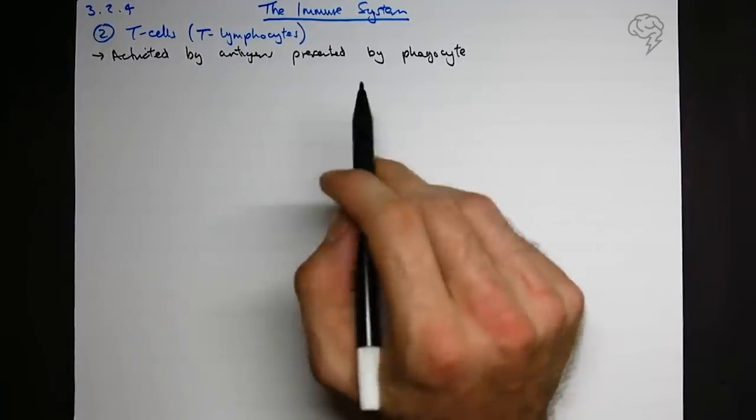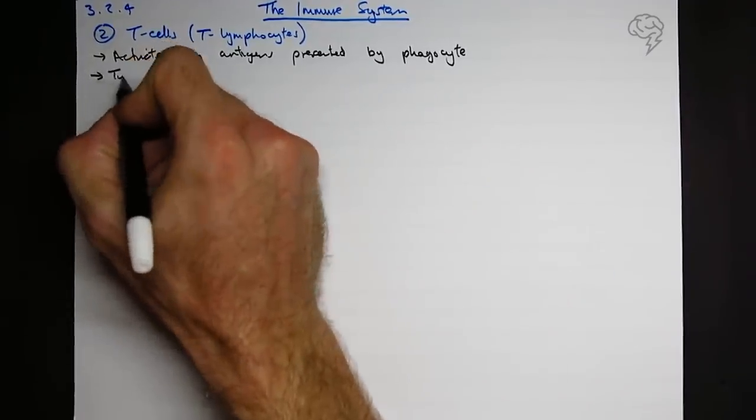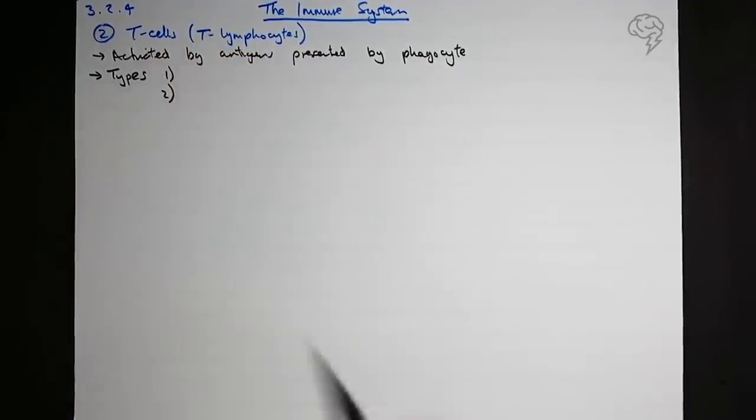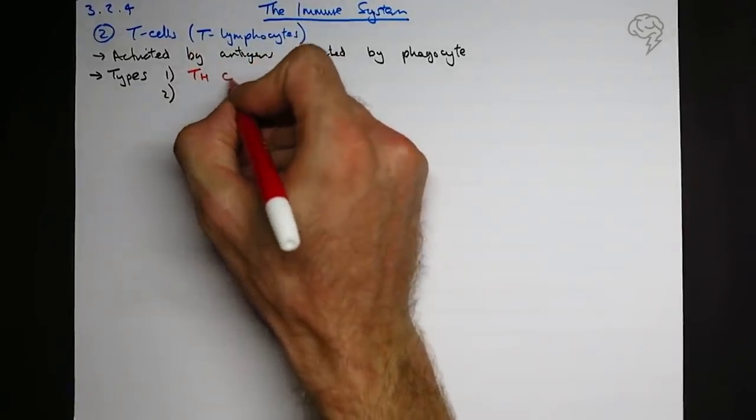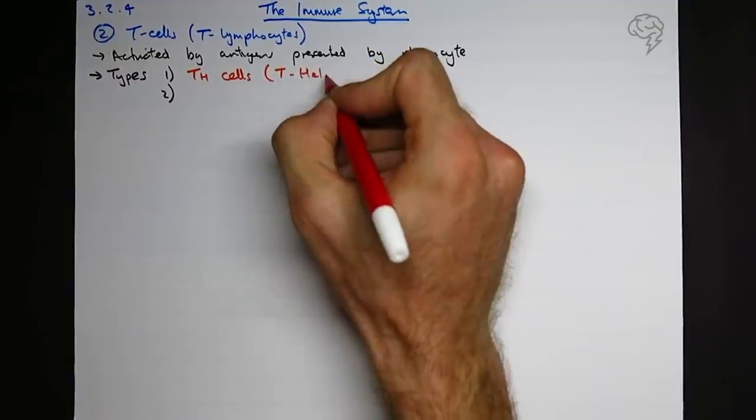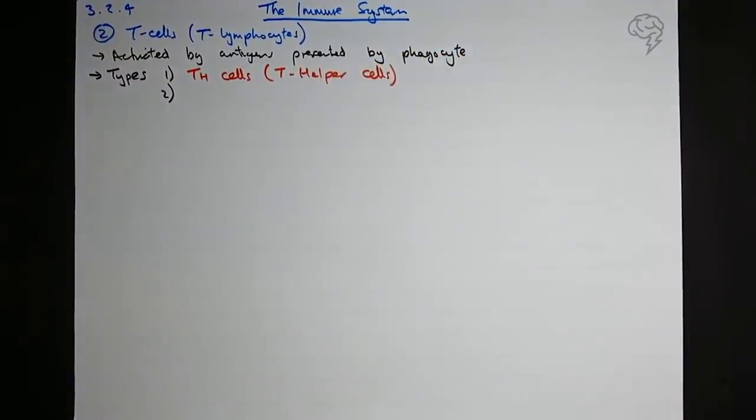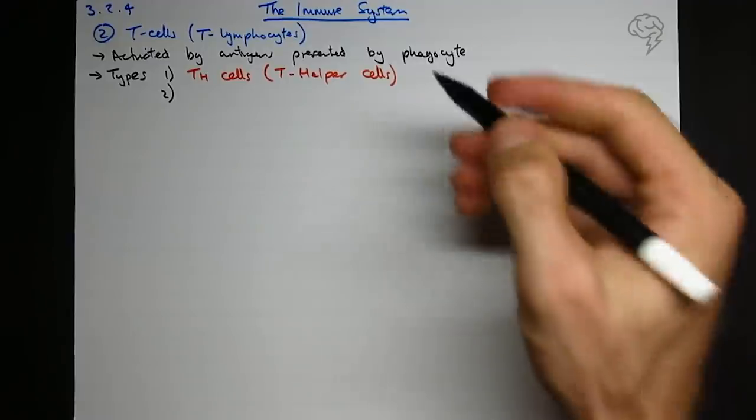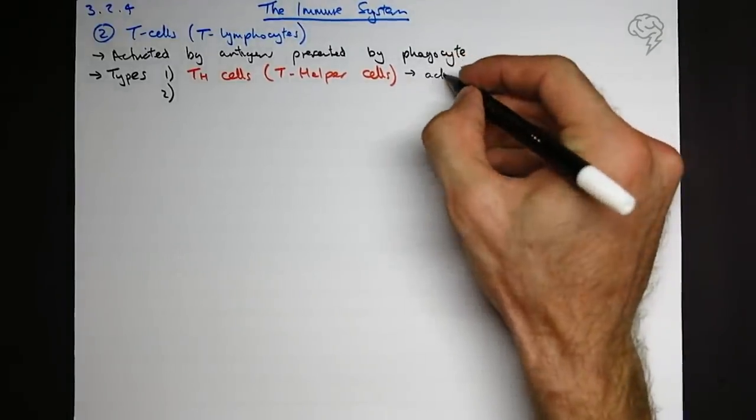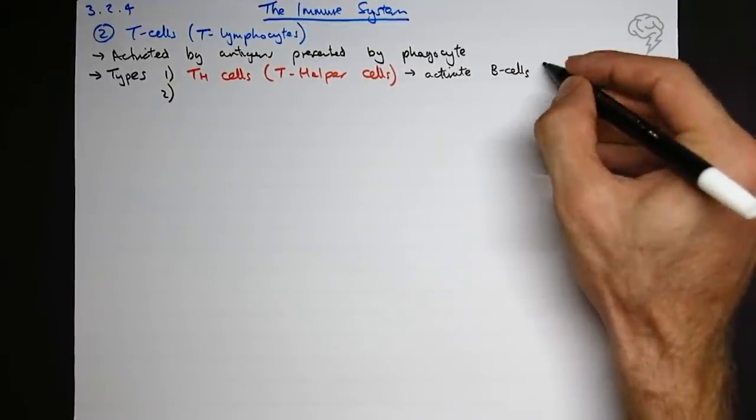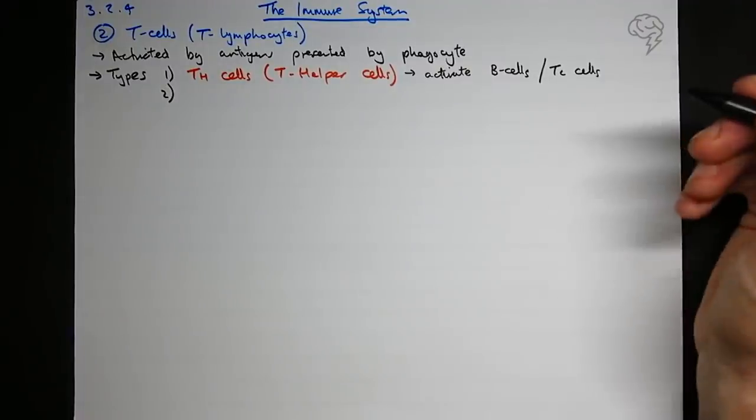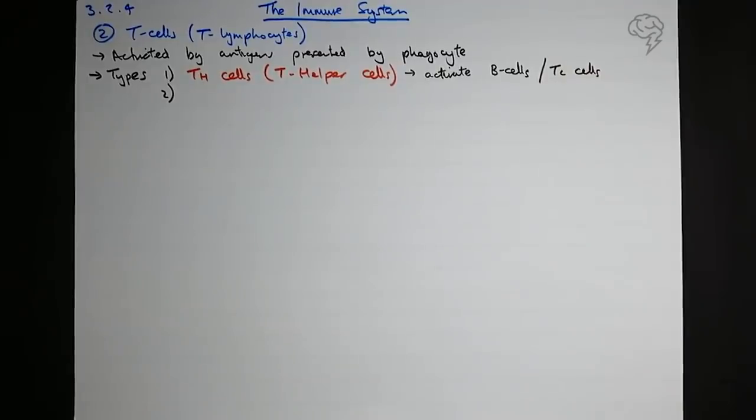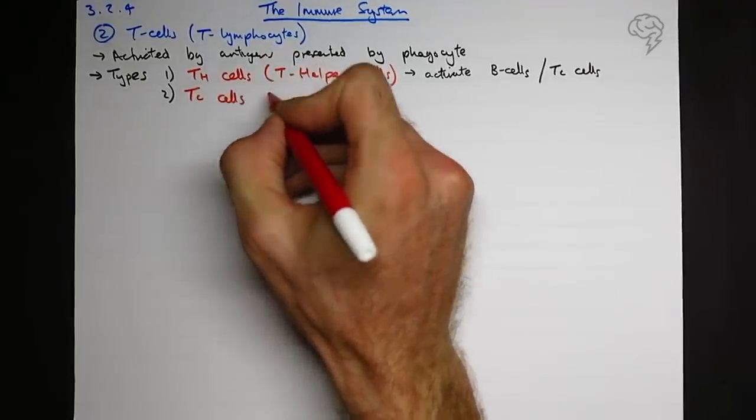There's actually two types of T-cell. The first type we're going to call TH cells. These are T helper cells. What do they do? They activate, they switch on other parts of the immune response. So they activate B-cells and they also activate TC cells, which are the other type we're going to look at, and also phagocytes and other bits and pieces. But they switch on more of the immune response. And then obviously we've got our TC cells.